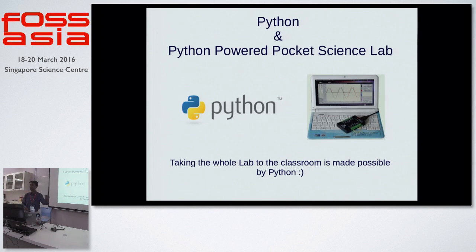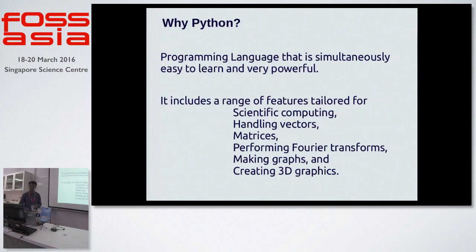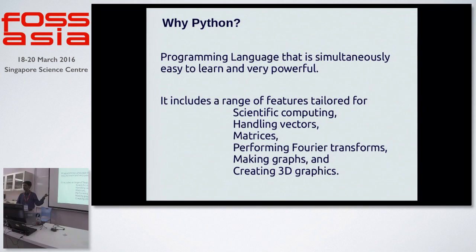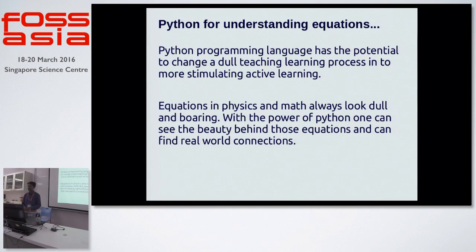This problem is partially solved by Python and my Pocket Science Lab, which is powered by Python. It's a small computer interface. Python could help me take my lab to the classroom and demonstrate so many things. For a physics teacher, very rarely you'll find someone who can also code, so for people without any programming background, Python is the easiest choice. It's very simple to understand, has built-in libraries for everything, yet it's powerful — with special features for scientific computing, handling vectors, matrices, performing Fourier transforms, making graphs, and creating 3D visuals.